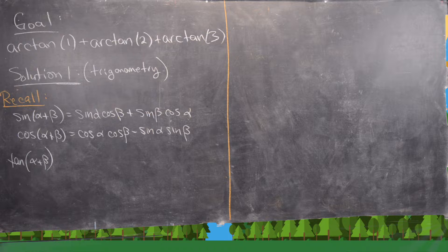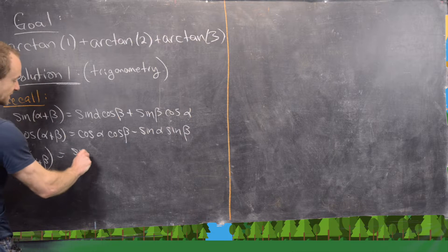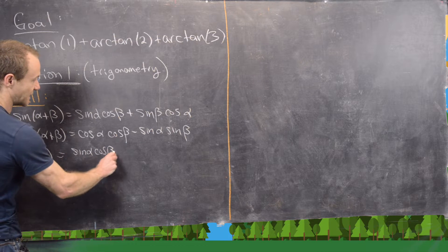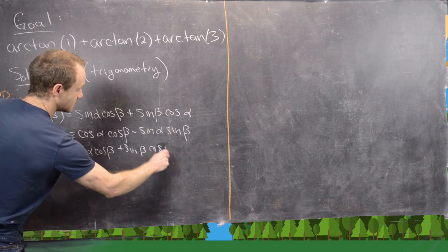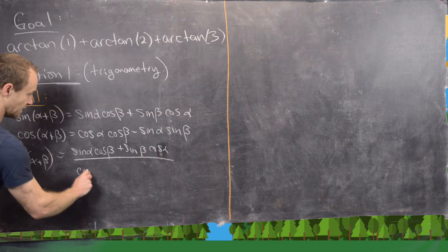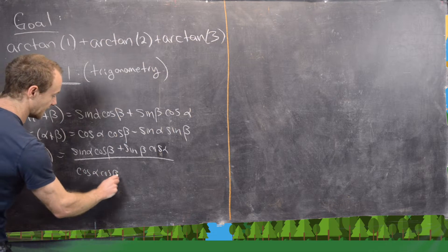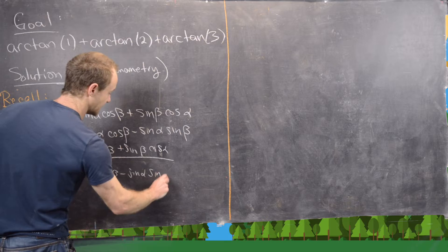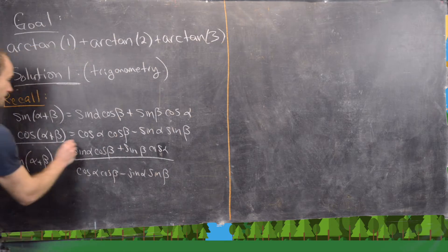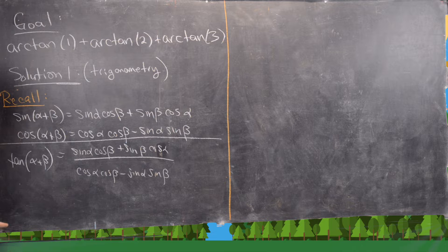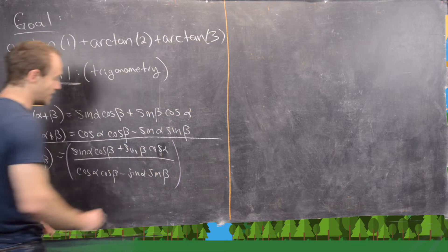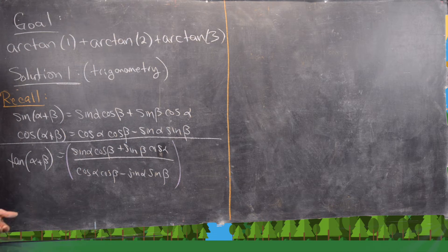So we have tangent of alpha plus beta equals sine of alpha cosine beta plus sine of beta cosine alpha, all over cosine alpha cosine beta minus sine alpha sine beta. This is going to be a really important formula once we write it in terms of the inverse tangent, but first we need to rewrite the right-hand side to have tangents instead of sines and cosines.